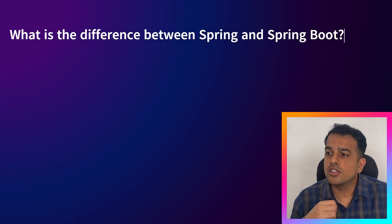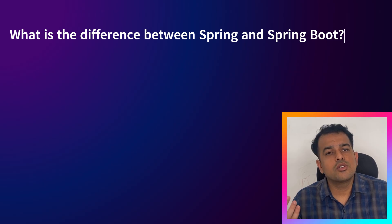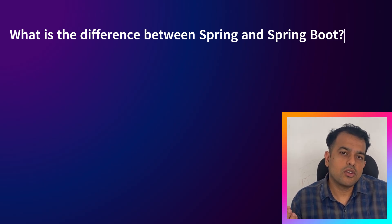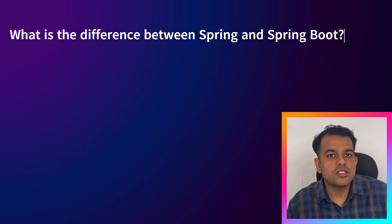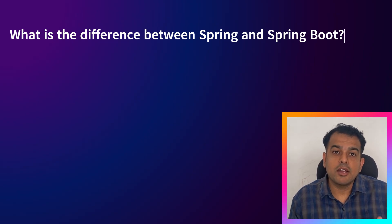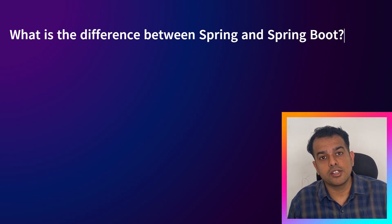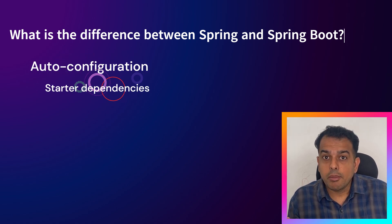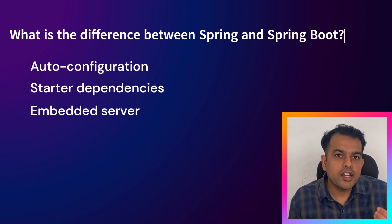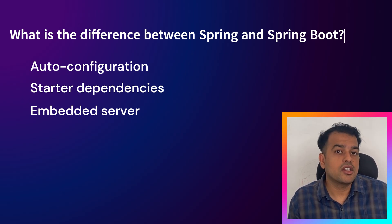The question was: what is the difference between Spring and Spring Boot? To answer this, you can say something like: Spring is a core framework that provides features like dependency injection and AOP, but the setup was manual — we had to write XML files for configuration. Spring Boot makes the process automatic. It provides auto-configuration, starter dependencies, and an embedded server.